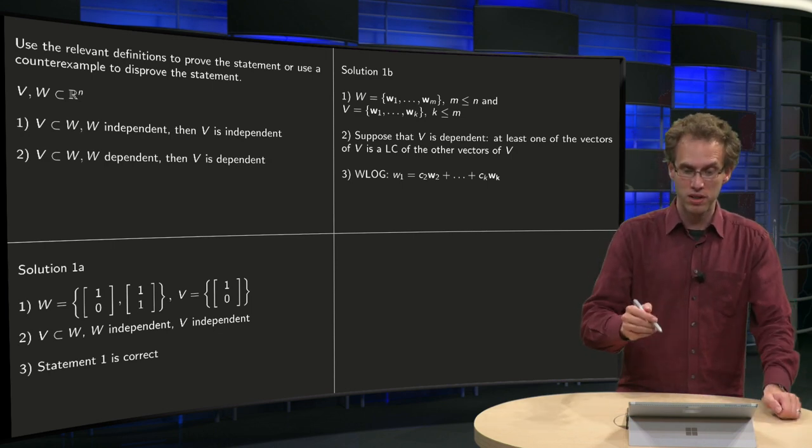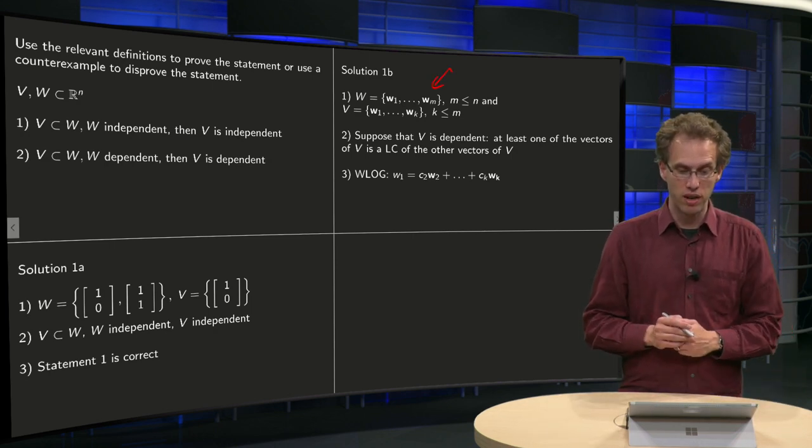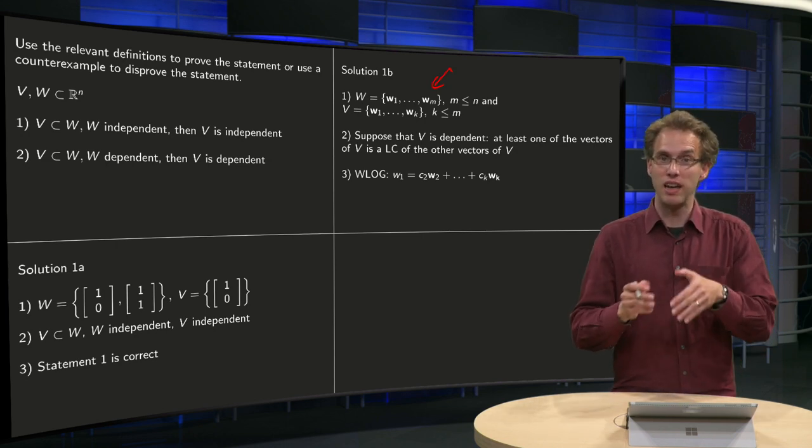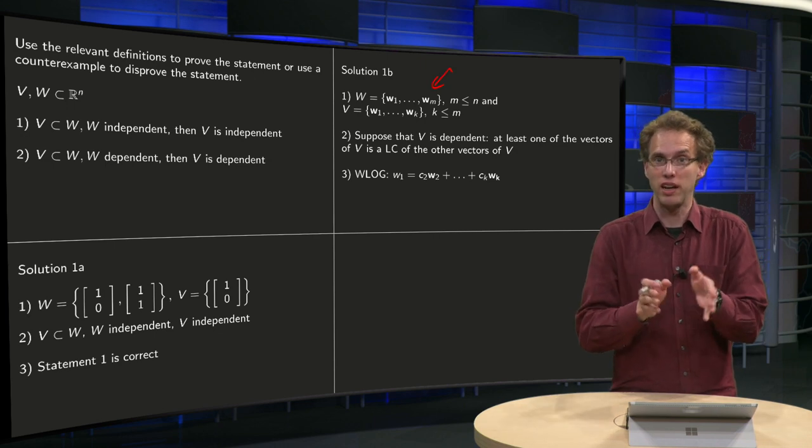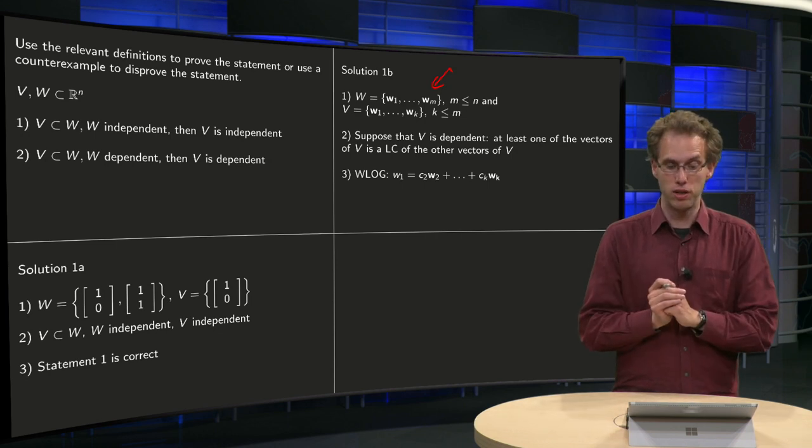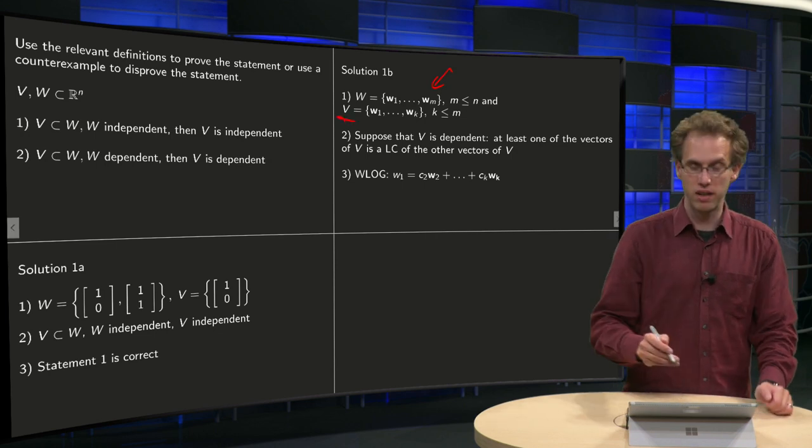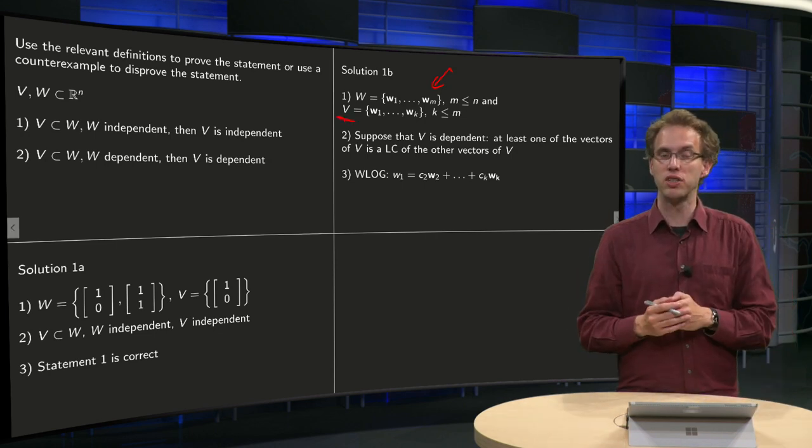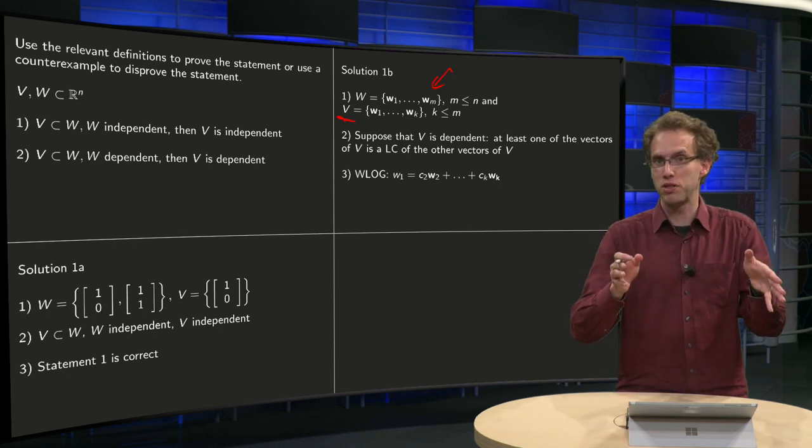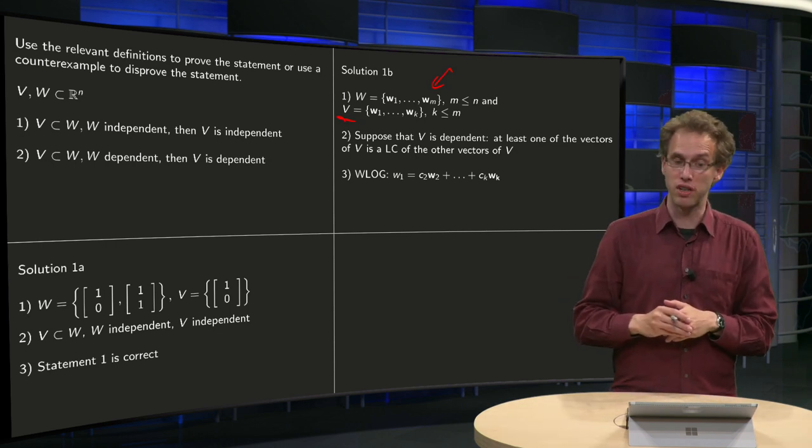So we take some set W consisting of m vectors, they live both in R^n, so you need less vectors than n, because in R^n you have at most n independent vectors, so we take m vectors in W, and your V is a subset of your W, so you take the first k vectors. You can do this without a loss of generality, if V has to be some subset, you just order the vectors in such a way that you have the first k vectors for your set V, so that's fine.